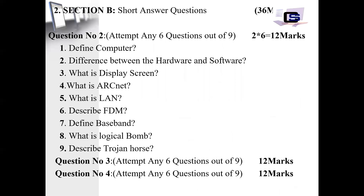Section Number 2 consists of short questions. Question Number 2 is our Section B. You must attempt only 6 questions out of 9. There are a total of 9 questions and you attempt 6. Each question has 2 marks, so 2 multiplied by 6 equals 12 marks total.